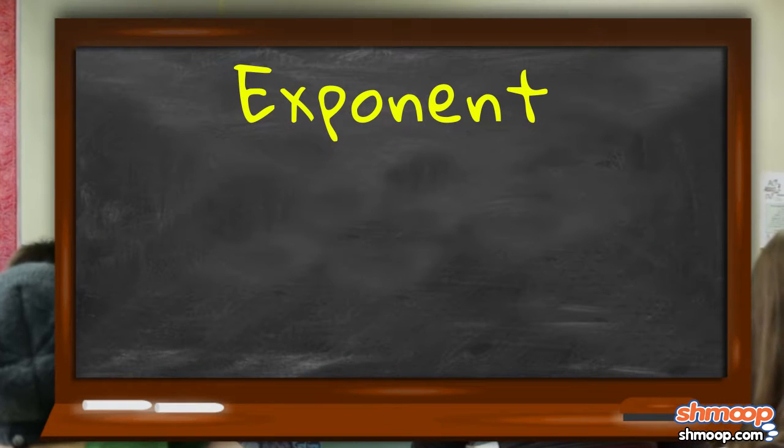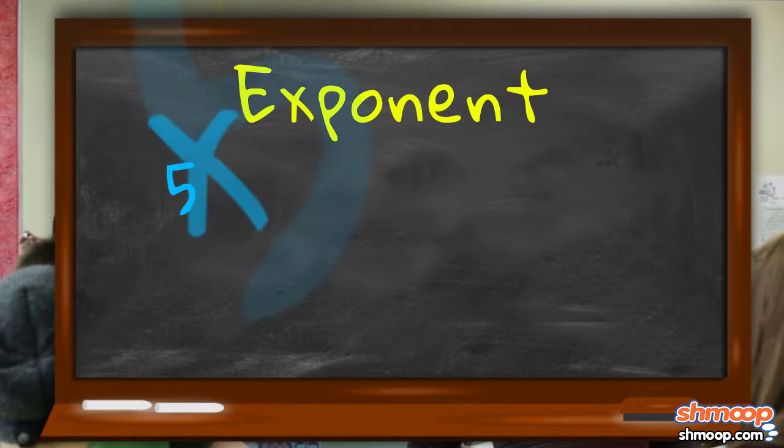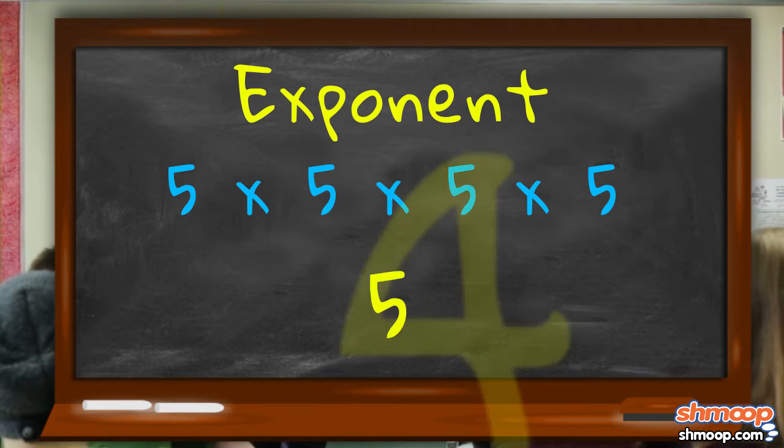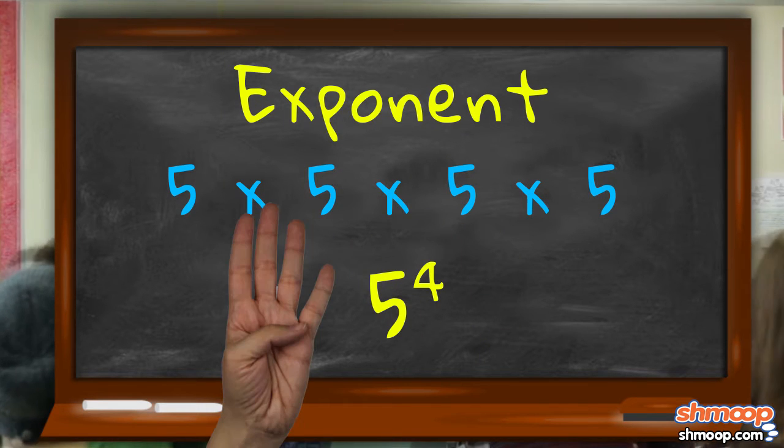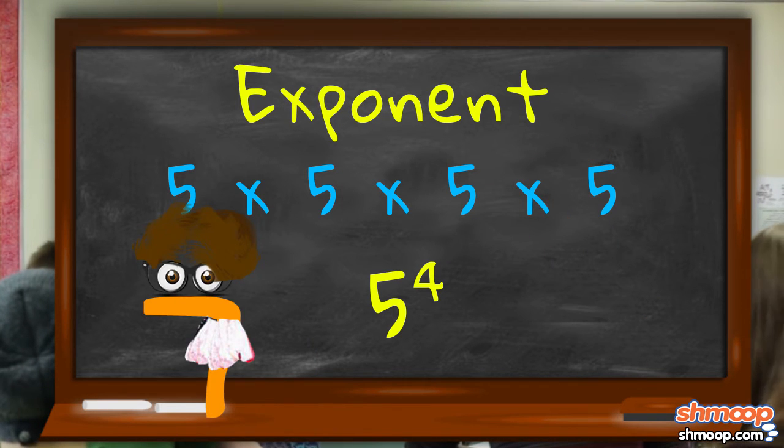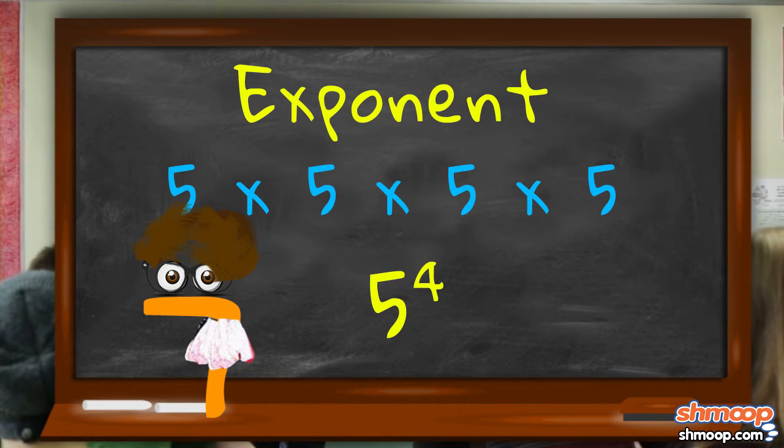An exponent can take an expression like 5 times 5 times 5 times 5 and express it this way. We're multiplying four fives together, so our exponent is 4. Or as we might say, we are taking 5 to the 4th power.